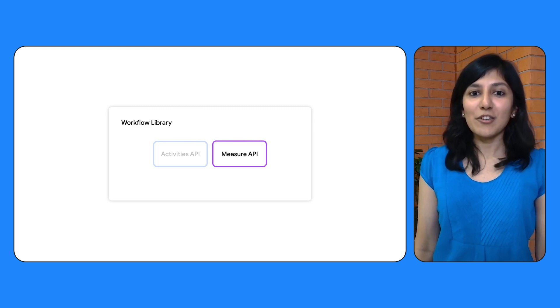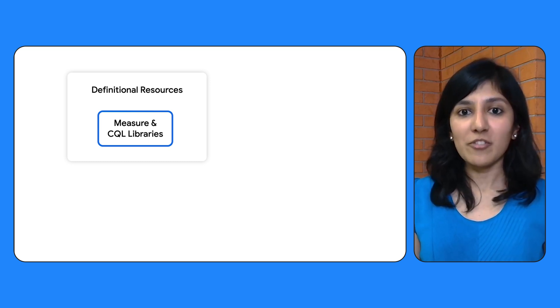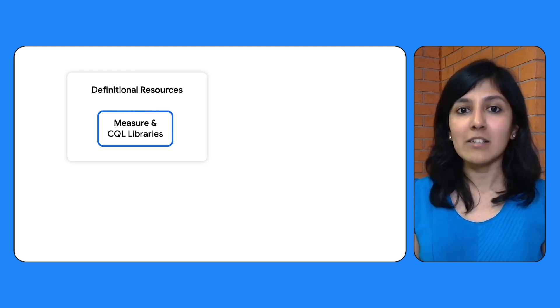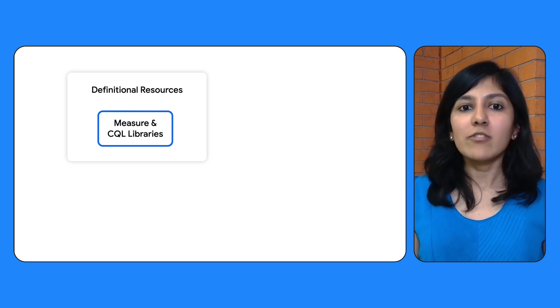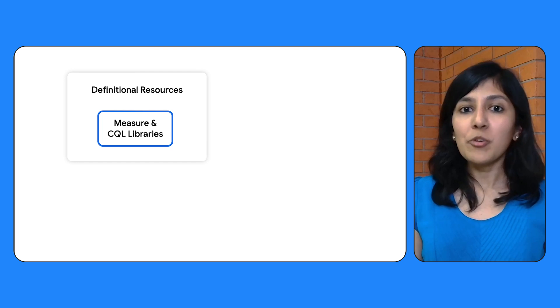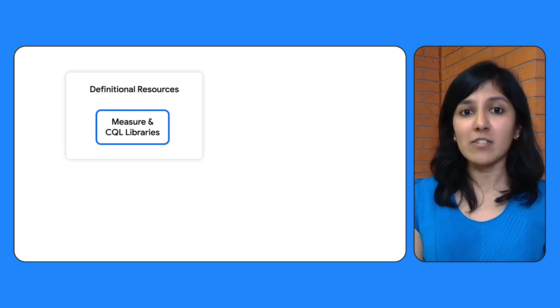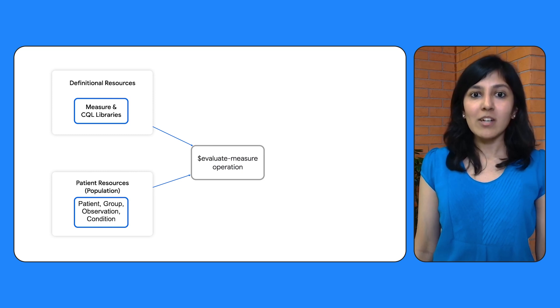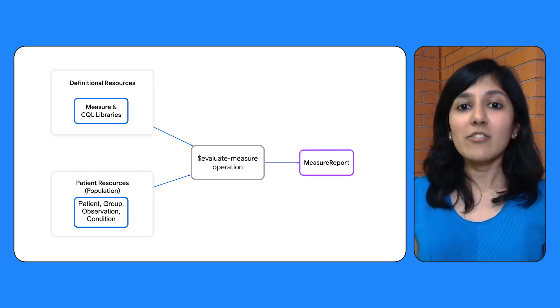Now let's take a look at the Measure API. As mentioned earlier, the Workflow library enables computation of clinical quality metrics for in-app analytics. This can be done using the measure resource and the FHIR Evaluate Measure operation. The measure resource represents a structured, computable definition of a health-related measure such as a clinical quality measure, public health indicator, or population analytics measure. Quality measures are often derived from clinical guidelines and are designed to determine whether the appropriate care has been provided given a set of clinical criteria and an evidence base.